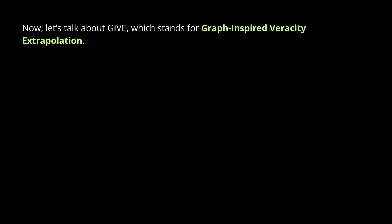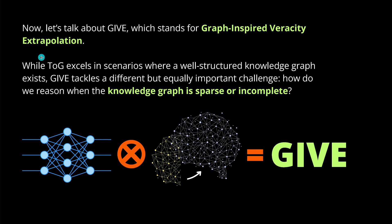Now, knowing this month-old model, let's look at the brand new model: GIF, which stands for Graph-Inspired Veracity Extrapolation — the truth. While ThinkOnGraph excels in scenarios where a well-structured knowledge graph exists, GIF tackles a different but equally important challenge: how do we reason in a dual-system way when the knowledge graph is sparse or incomplete? How can we use the parametric knowledge of the LLM to build a knowledge graph that enables us to answer human user queries? The answer is GIF.